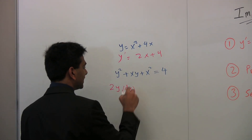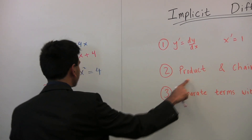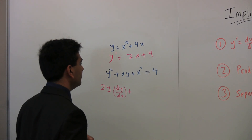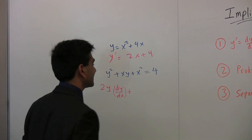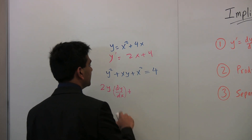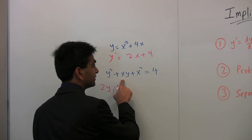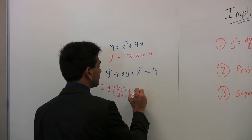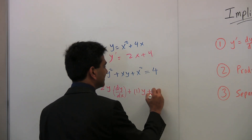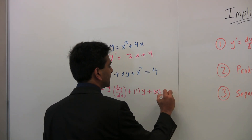For the second term, again we apply step two — the product rule. What is the derivative of x times y? Since neither x nor y is a constant, we have to use the product rule. So the derivative of xy is the derivative of x, which is 1, times y as it is, plus x as it is times the derivative of y, which is dy/dx.